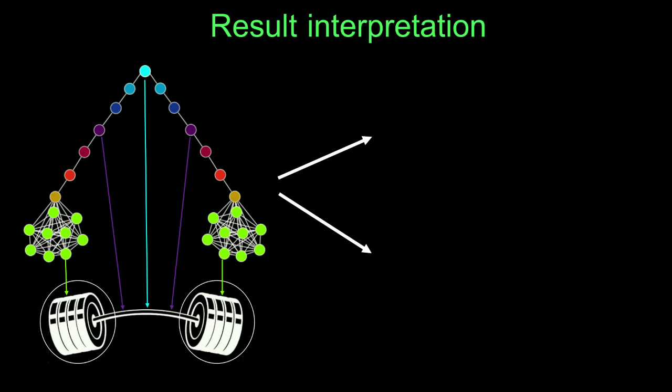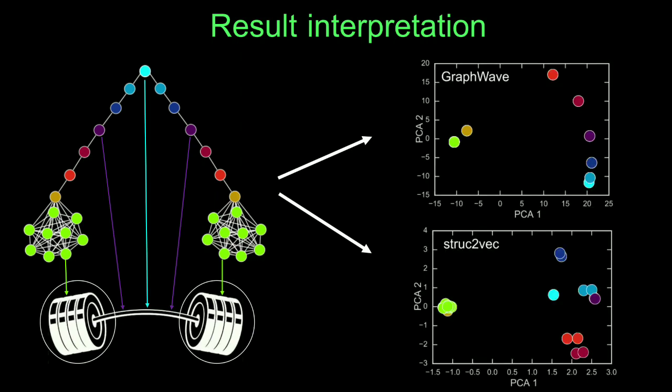Authors also compared the GraphWave algorithm with all state-of-the-art algorithms which is Structure2Vec on barbell graph. Barbell graph has eight different structural nodes. For example, barbell disks have same roles but parts of the bar have different roles. Notice that GraphWave perfectly recovers eight structural roles in the graph.